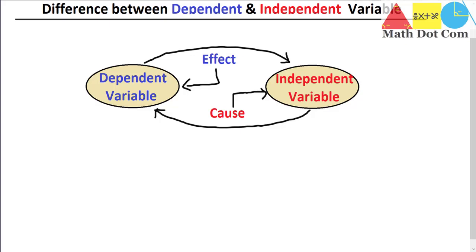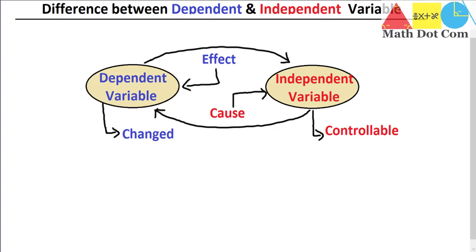The independent variable is causing a change in the dependent variable. The independent variable is controllable by the researcher — you can change its values so that it has an impact on the dependent variable, to analyze whether that change has an effect or not. You are not going to change the value of the dependent variable; it will not be controlled, but the independent variable is controllable and can impact the dependent variable.